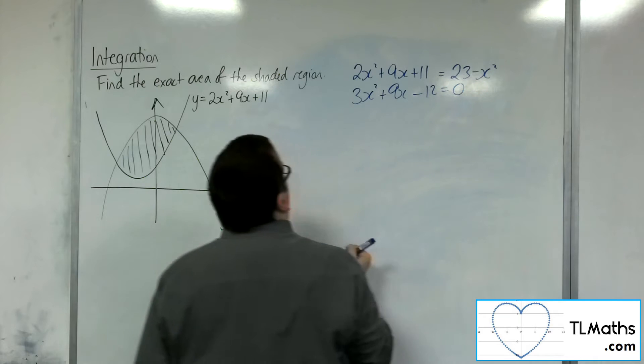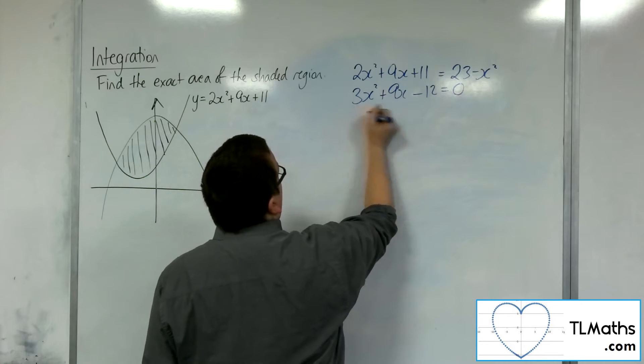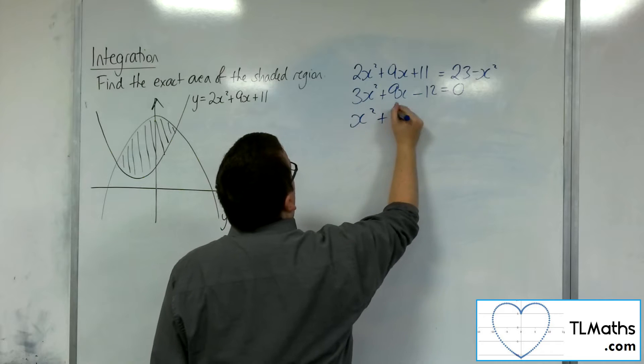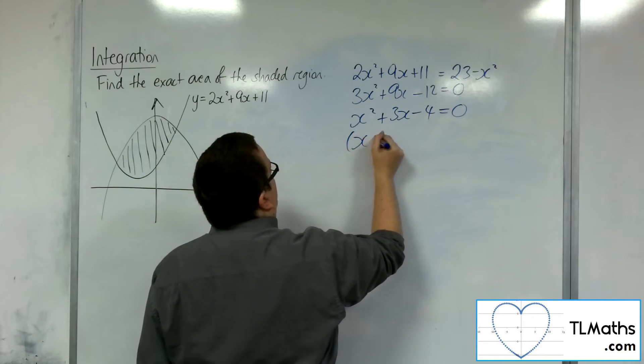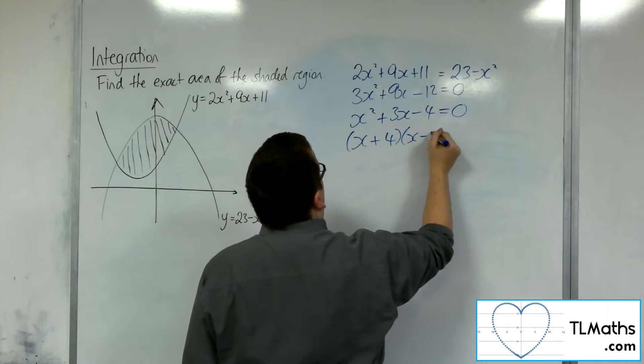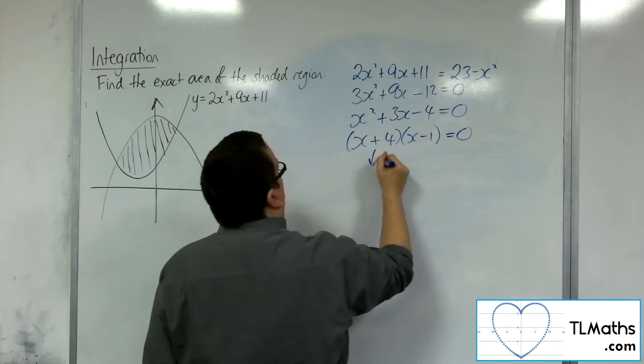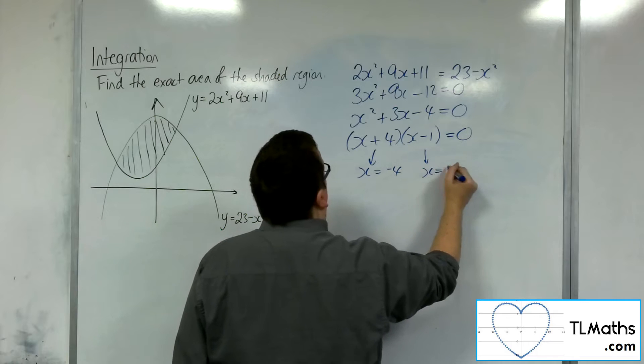Minus 12. So here's a quadratic I can divide through by 3, so x squared plus 3x minus 4. Here's a quadratic that I can factorize. So x is minus 4, or x is 1.